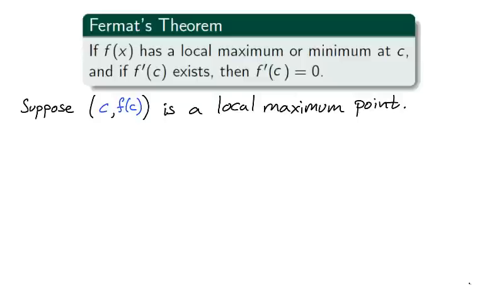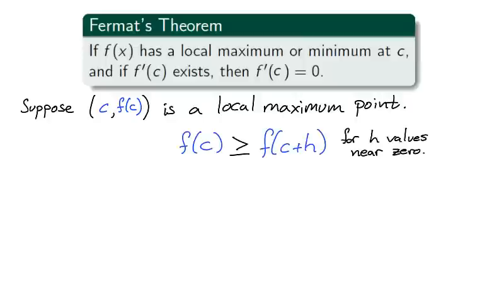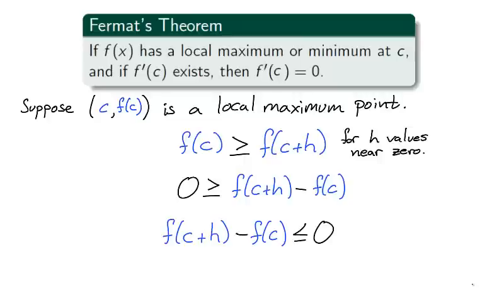Suppose the point (c, f of c) is a local maximum, and assume the derivative at c exists. As a local maximum, f of c is larger than f of c plus h for h values near zero. With a bit of algebraic manipulation, we find that f of c plus h minus f of c is not positive.